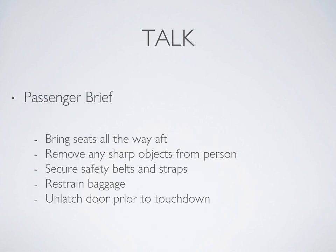The passenger brief just needs to cover a couple of things. My recommendation is to write it down and memorize it so it's easy to do in an emergency. It can sound like this: 'I need you to prepare yourself for an emergency situation. Bring your seat all the way back. Remove sharp objects from your body. Secure your seatbelts and any baggage. Just prior to touchdown, I want you to unlatch your door and protect your head. Once we come to a complete stop, get out and meet me behind the aircraft. Do you understand?'